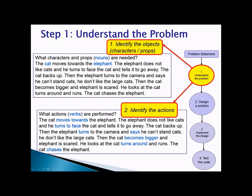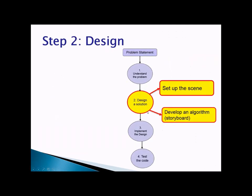So two things: identify what objects you need and identify what actions you need. The second step is designing a solution to the problem. Now we know the problem statement and understand it — how are we going to design a solution? The first step in designing a solution is to create an initial scene. The second step is to develop a storyboard using an algorithm.